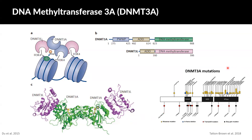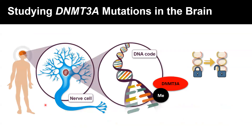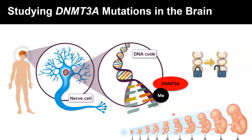Many mutations have been identified in DNMT3A. A mutation is a mistake or a change in a gene that can lead to genetic disorders or to illnesses. Young brains are particularly sensitive to epigenetic changes, and thus to mutations in DNMT3A. To study the impact of DNMT3A mutations on the brain, we need brain cells that we can derive from patients themselves or mouse models. Our lab looks specifically at neurons to understand how mutations in DNMT3A will affect the methylation patterns on DNA and the future development and health of the brain and the individual.